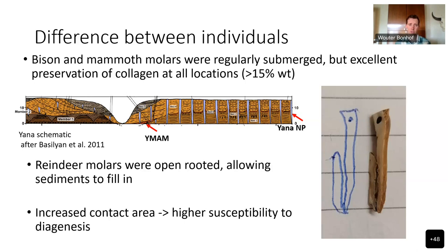A more parsimonious explanation is that the reindeer teeth had not completely developed — the roots were still open and the pulp chamber was still accessible to sediments. Indeed, when we sampled these teeth, we did find sediments within the pulp chamber of the reindeer molars, whereas this was not the case for the mammoth or the bison. This meant strontium had a much greater contact surface and, from within the molar, could affect the strontium isotope ratios of the dentine.